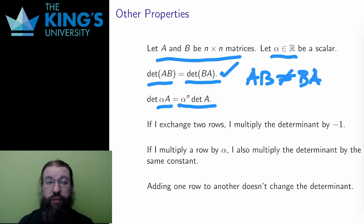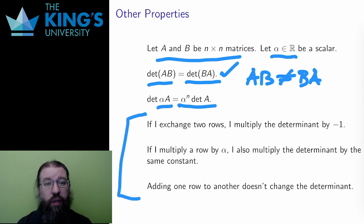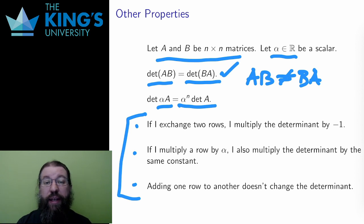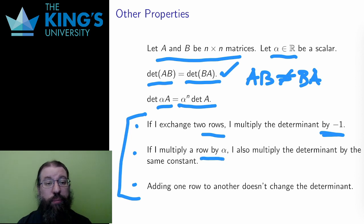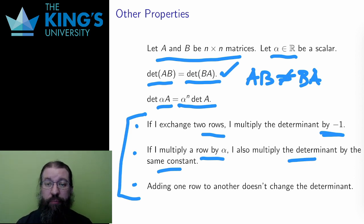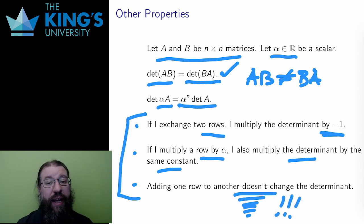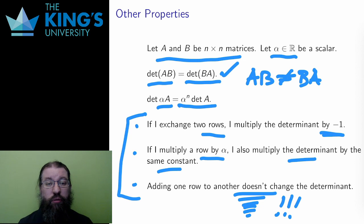Finally, let me talk about row operations and how the determinant interacts with row reduction. There were three operations: switching rows, multiplying a row by a constant, and adding one row to another. Switching rows introduces a negative sign to the determinant. Multiplying a row by a number alpha also multiplies the determinant by alpha, which fits the discussion about scaling directions. Finally, and most surprisingly, adding one row to another has no effect on the determinant. All this together gives another way to calculate determinants — just keep track of the switches and multiplications during row reduction and combine them to get the determinant of the matrix.